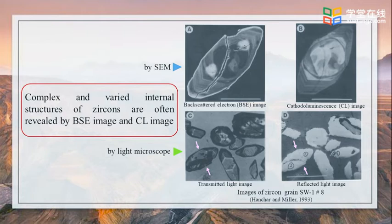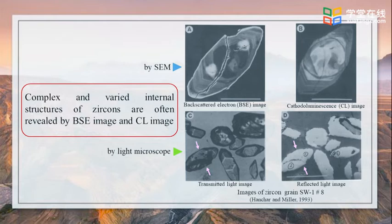The cathodoluminescence image by scanning electron microscope can play a useful complementary role alongside backscattered electron images and light microscope, often revealing finer details. None of the internal structures revealed by the backscattered electron and CL images are seen in either the transmitted light image or reflected light image by light microscope. The light microscope is easy, fast, and shows the real coloring of the object. However, it is not good enough to make very small items visible.